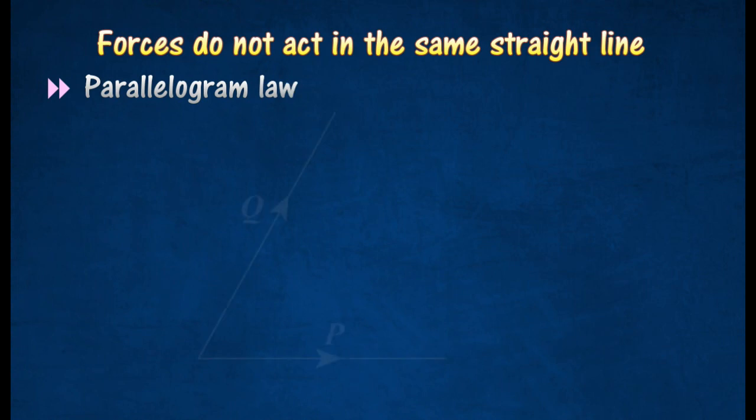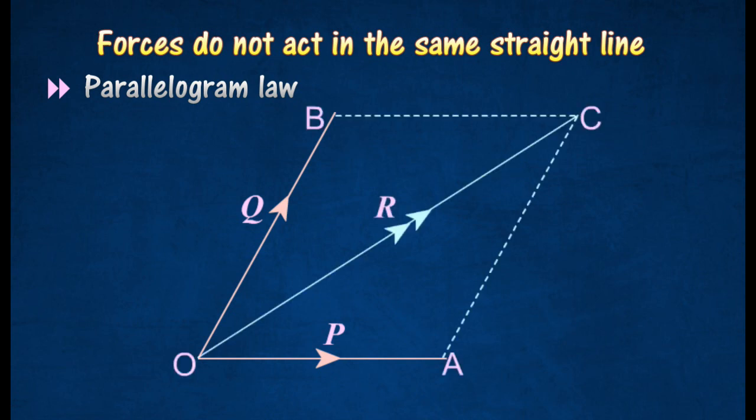Parallelogram law states that if two forces acting at a point are represented in size and direction by the sides of a parallelogram drawn from the point, their resultant is represented in size and direction by the diagonal of the parallelogram drawn from the point. This method is suitable if the two forces are not at right angle to each other.